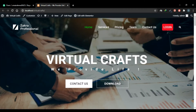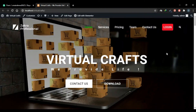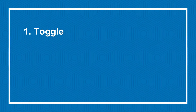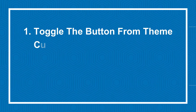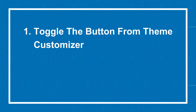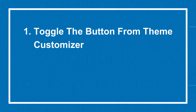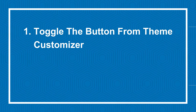Now there are three ways we can add a back-to-top button to our website. One way is to toggle the back-to-top setting in your theme customizer. Note that not all themes provide a back-to-top button feature, in which case you'll have to go for the other two ways.